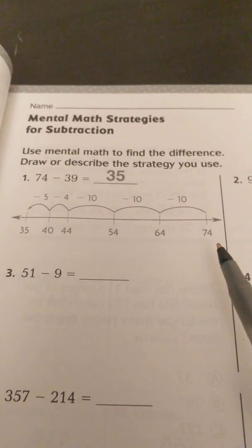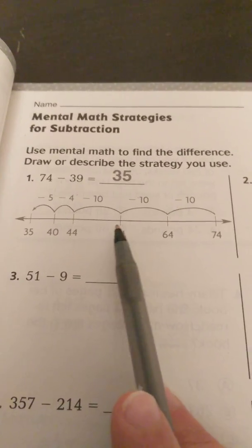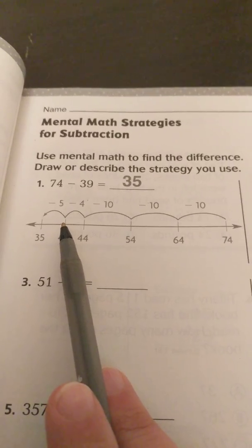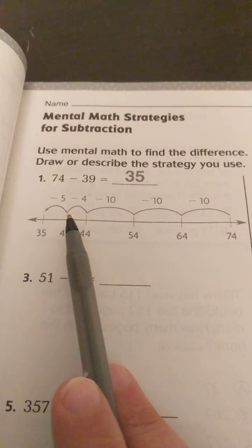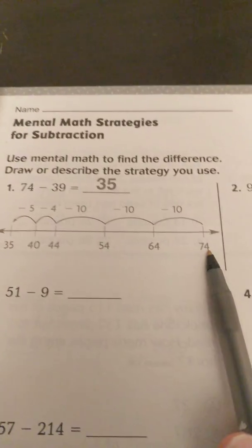So they don't really give you a choice on what strategy to use or how to show it. They've drawn a number line here as an example of how to do it. So what they did was they started with the number 74 here, as you see here.